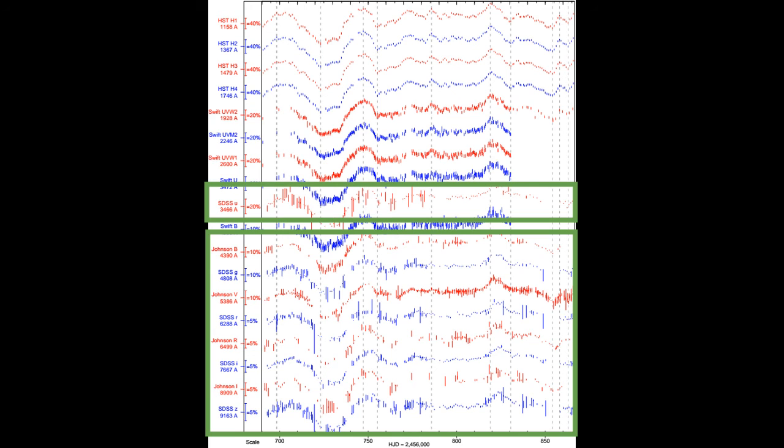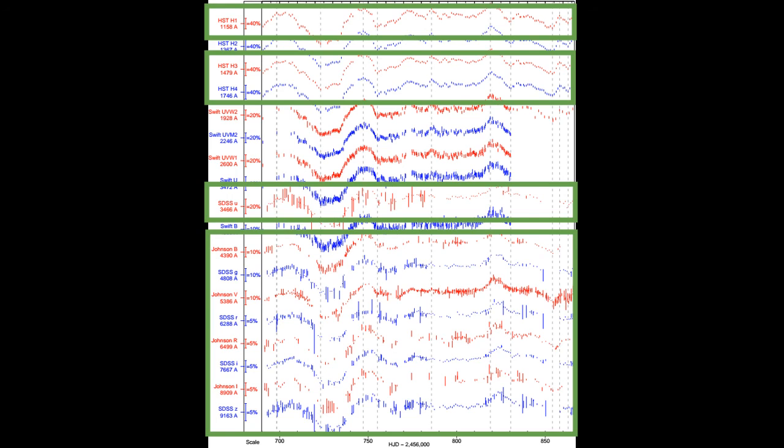The data set is very heterogeneous, with 16 contributing observatories, but achieved approximately daily cadence in all filters for the entire monitoring campaign. Three additional far-UV light curves extracted from the HST COS spectra are also presented here.